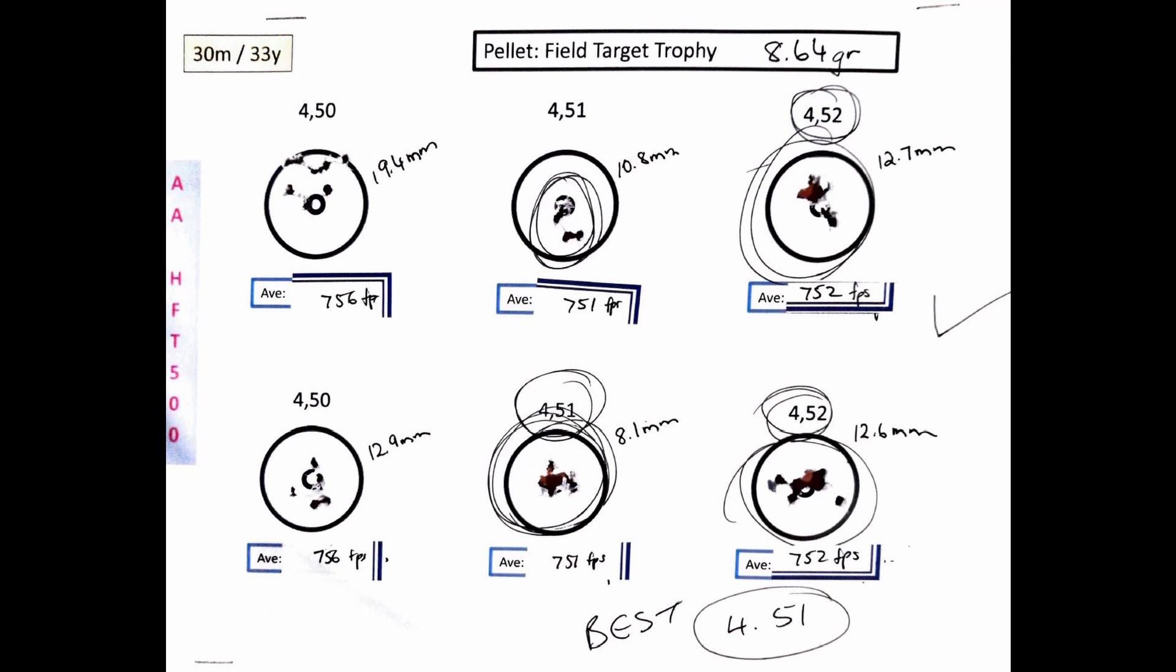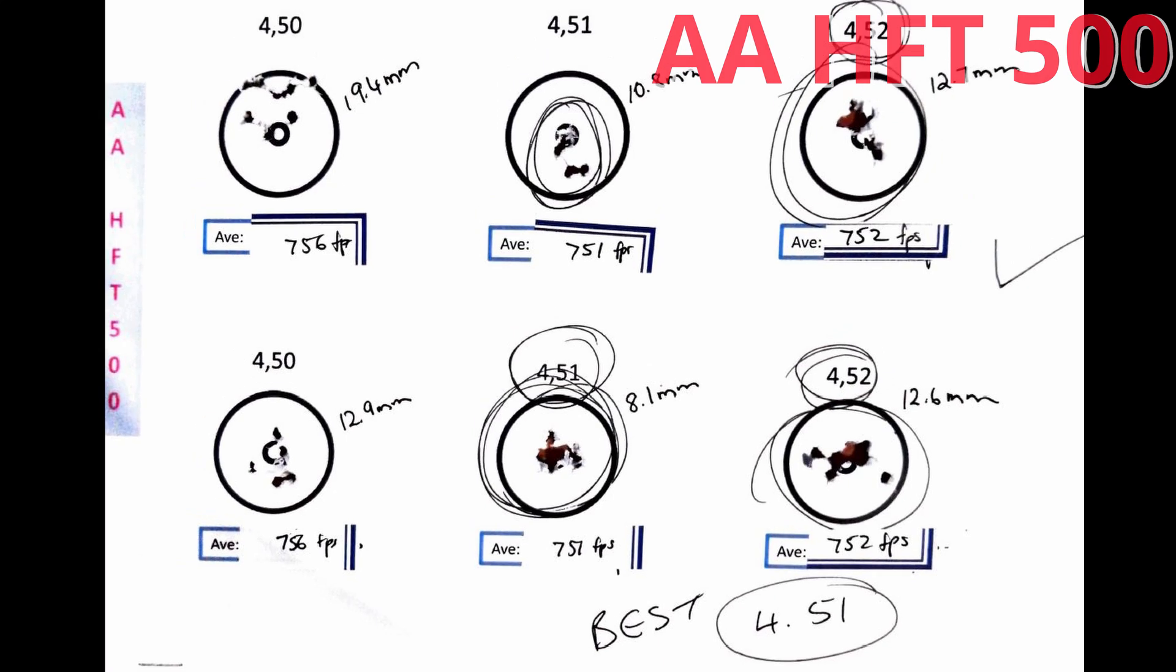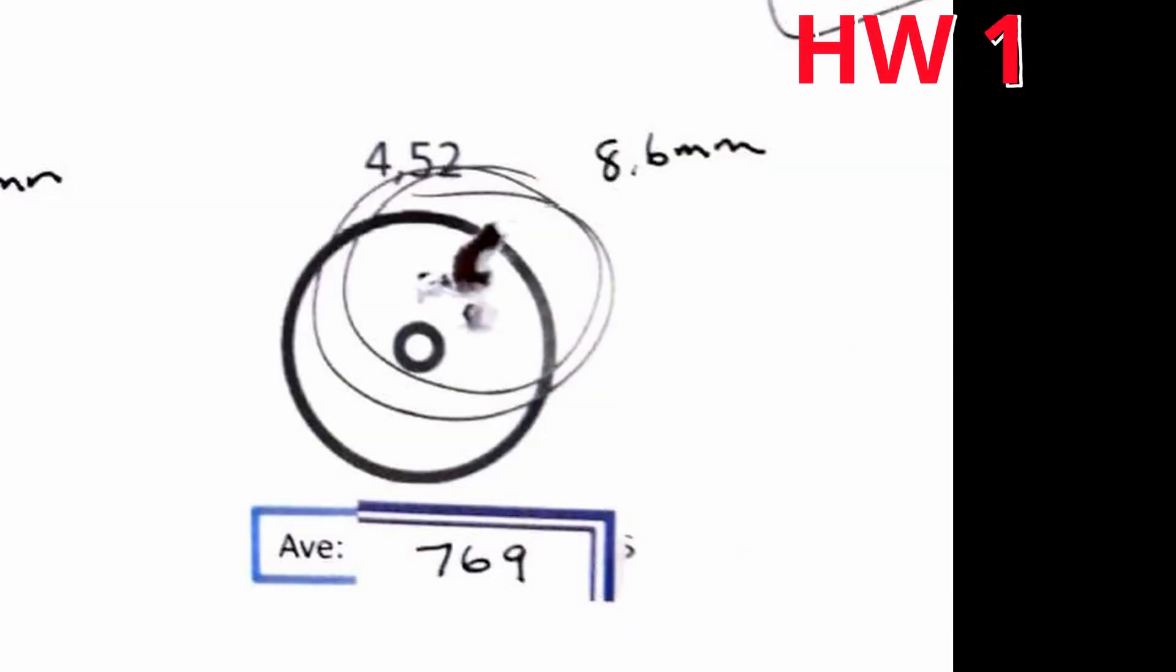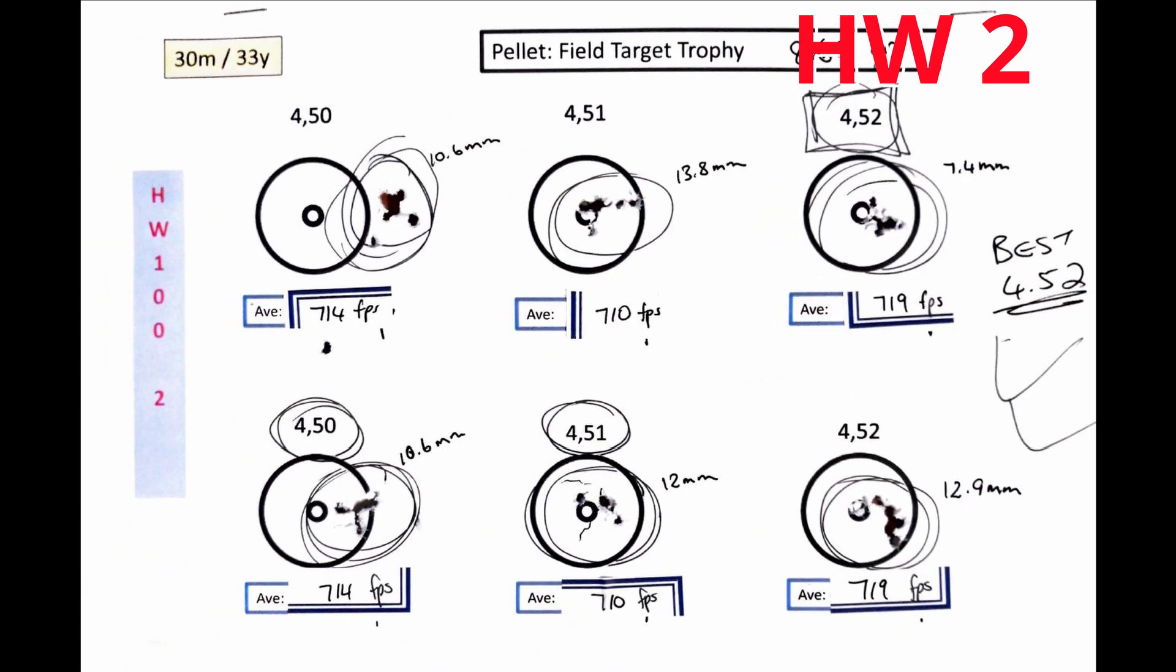All right, time for a final conclusion and then we'll wrap up. The Air Arms HFT 500 preferred the 4.51s above the 4.52s with some excellent groupings in both. It did not like the 4.50s at all. The HW1, on the other side, shot decent groups across the board but with significantly better groupings in the 4.52 category. And then over to the HW2, the HW2 loved all of them—the 4.50s, the 4.51s, and the 4.52s—with the most accurate groupings in 4.52. Just shows you two of them prefer the 4.52 and the one loves the 4.51, but overall my HW2 just loves these H&Ns. Final thoughts guys, I can't make up my mind yet, so I'm going to take them out to the 50 meter range and test them a little bit more. Watch out for the next video.